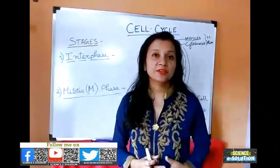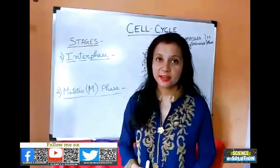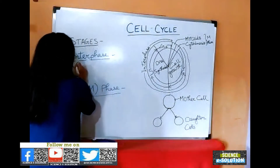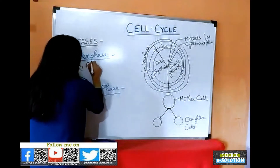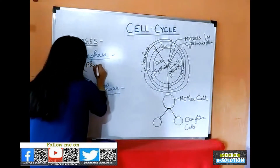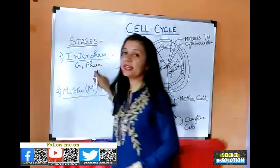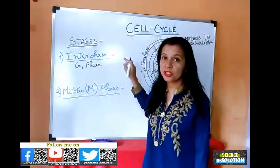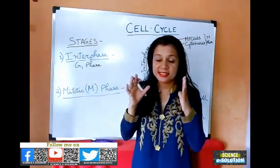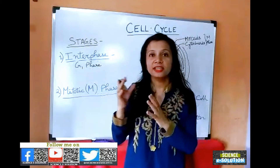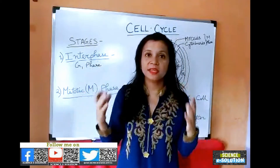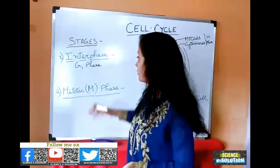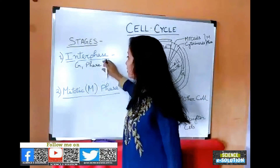This preparatory interphase can be divided into three phases. The first is the G1 phase, or Gap Phase 1. In this phase, cell growth occurs — cell organelles divide, cytoplasm increases in amount, and more and more proteins are formed. So this phase is also called the cell growth phase.